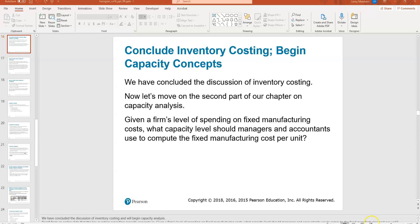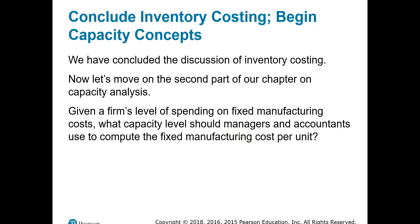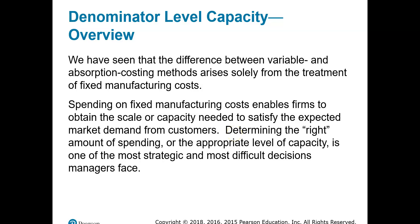Now that we've discussed absorption costing and variable costing, let's take a look at the difference, and we're going to focus on the second part of our chapter: capacity analysis. Given the firm's level of spending on fixed manufacturing costs, what capacity level should we use to compute the fixed manufacturing cost per unit? Because the difference in operating income arises solely from the treatment of fixed manufacturing costs and how we compute fixed manufacturing costs per unit. So what is the right level of capacity that we should be using?